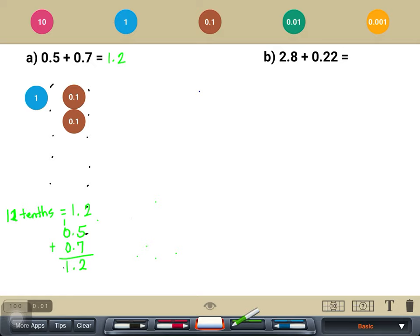Alright. Now, let's move to letter B. For letter B, we have 2 and 8 tenths plus 22 hundredths. Let's try to visualize that again using this app.